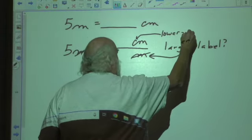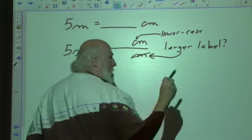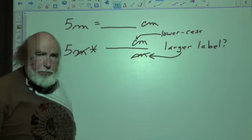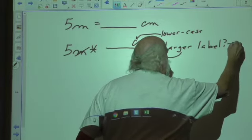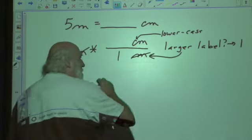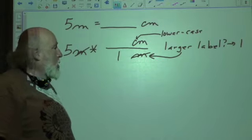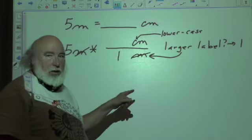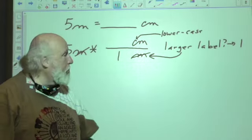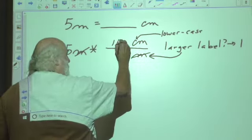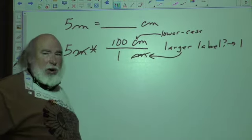Why? Because this is a lowercase c, which means that it is small compared to the base meter. So the larger label will always get the value of 1, so we put a 1 by the meter. The prefix centi means 100: 100 cents to the dollar, 100 years to the century. So we put 100 right there. And this is why we multiply.